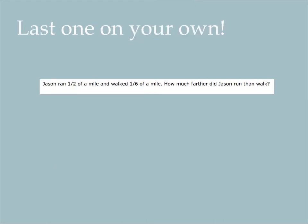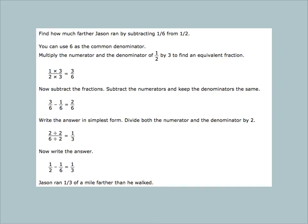This last one you're going to do on your own. I'm going to pull out the important information with you and then you're going to solve it. Jason ran 1/2 of a mile and walked 1/6 of a mile. How much farther did Jason run than walk? We know that he ran for longer than when he walked, so you're going to have to subtract those 2 numbers. Pause the video, try to figure it out.